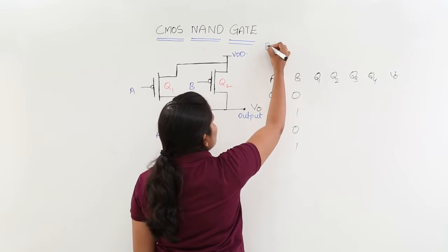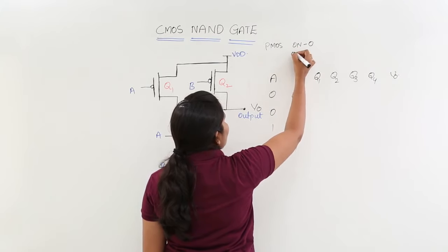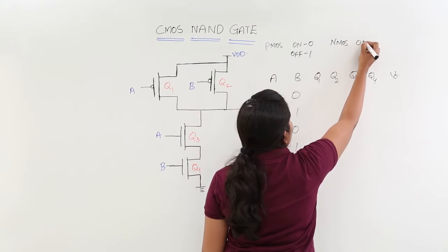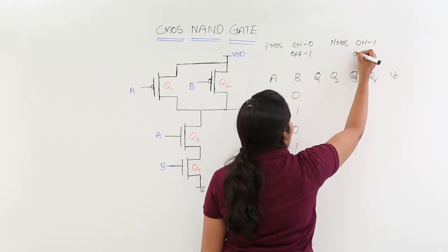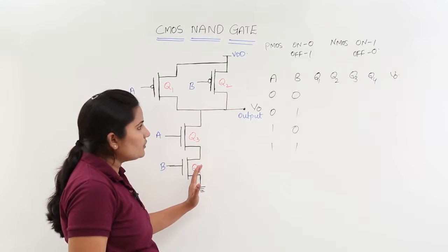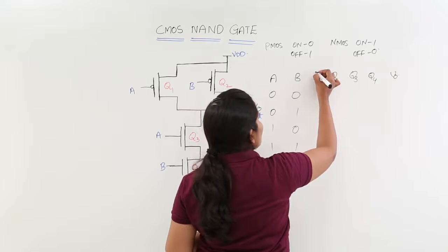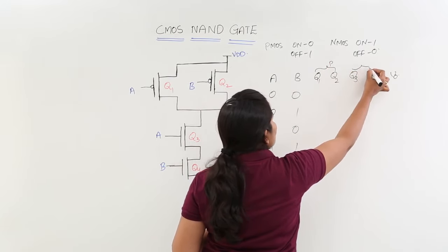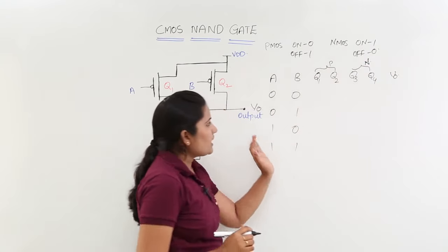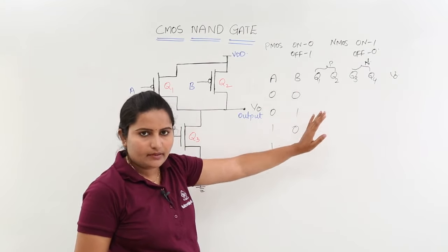This is PMAS. PMAS will ON for 0 and OFF for 1. Like that, NMAS will ON for 1 and OFF for 0. Q3 and Q4 are NMAS and Q1 and Q2 are PMAS. These two are PMAS transistors and these two are NMAS transistors. Now I am just writing the ON and OFF values of these transistors for NMAS and PMAS.